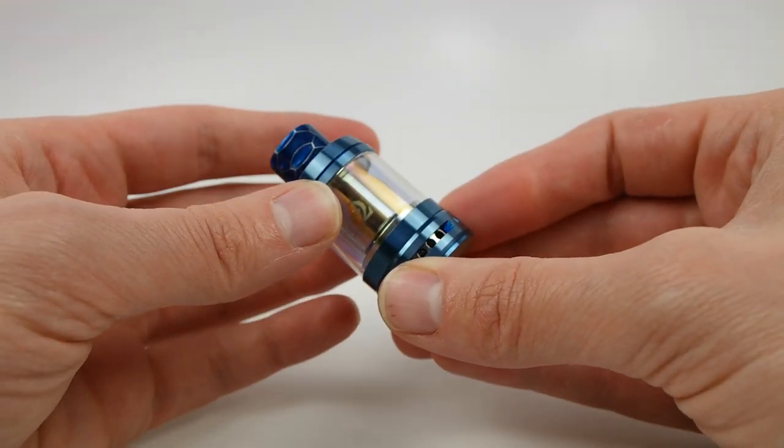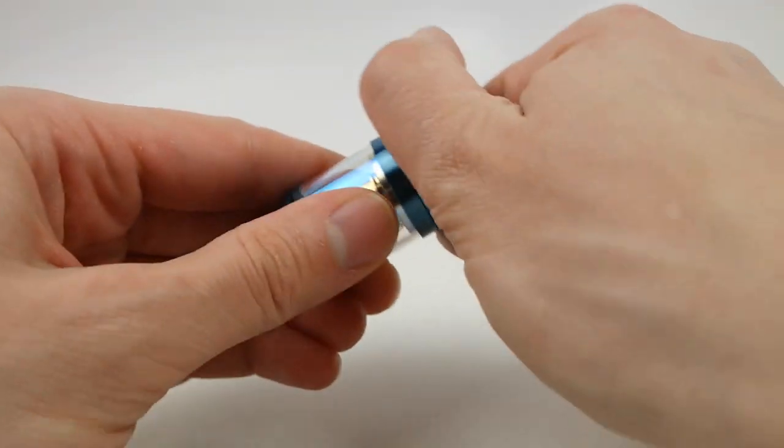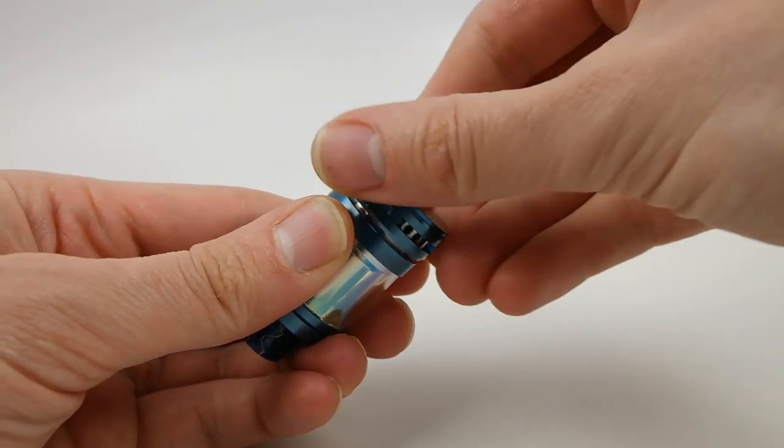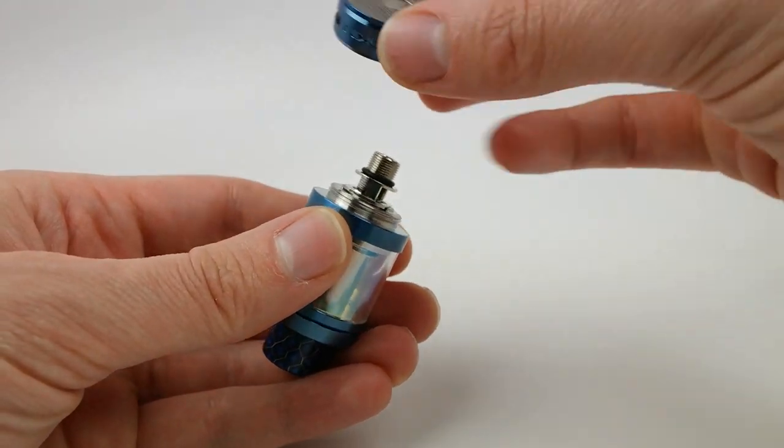Okay, so to prime this tank, we are first going to remove the coil from the tank. You're going to grip the base and screw it counter-clockwise to remove this piece.